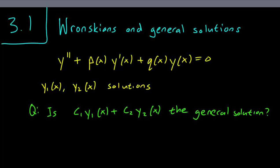We have this second-order linear homogeneous equation, y'' plus p(x)y' plus q(x)y equals 0. And we know that we have two solutions, y1(x) and y2(x).